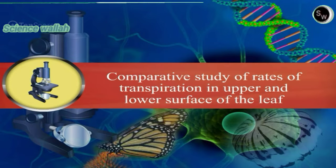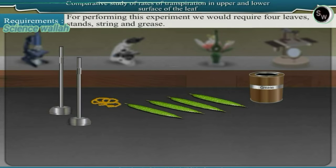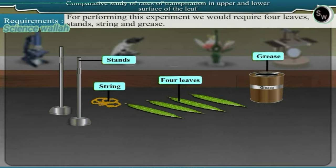Comparative study of rates of transpiration in upper and lower surface of the leaf. Requirements: For performing this experiment we would require 4 leaves, stands, string and grease.